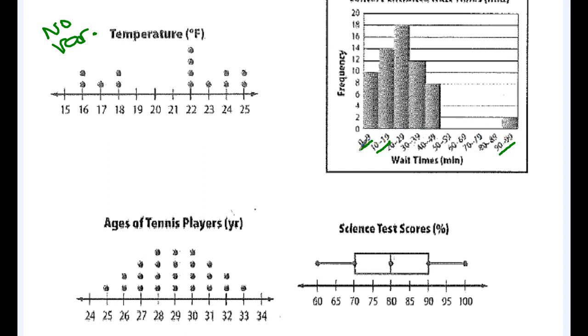So we have a wait time of going from zero minutes to 99 minutes. That's a pretty big spread, right? That's a lot of time to be waiting to go into a concert, so this one would have variability.